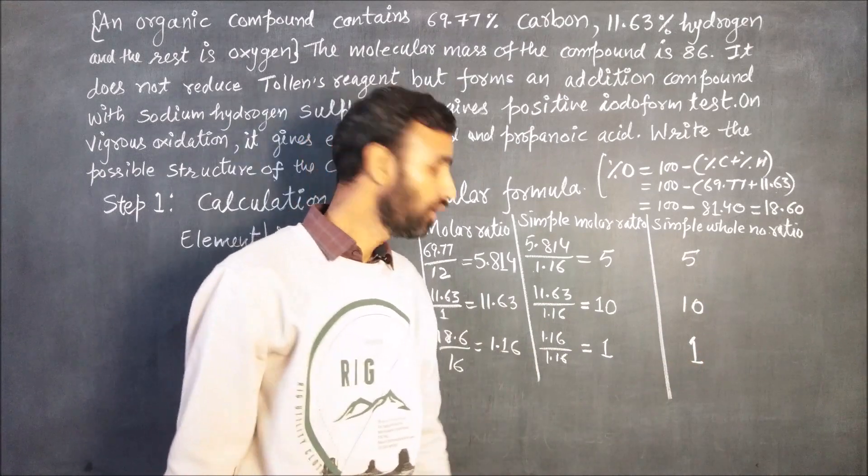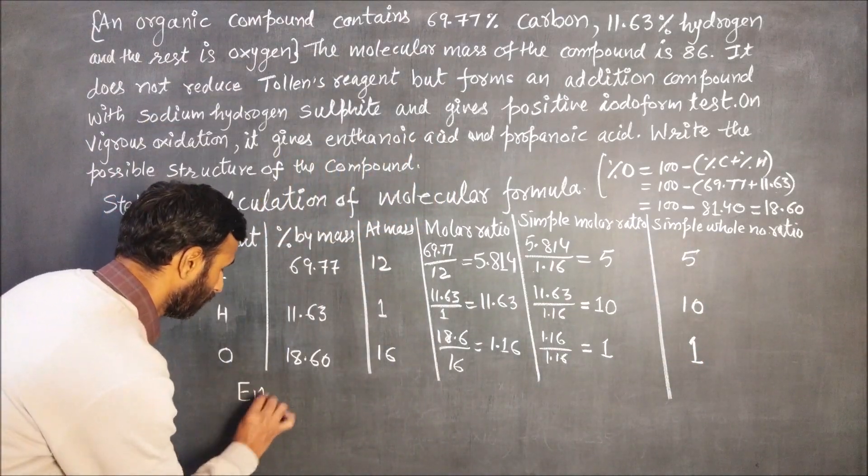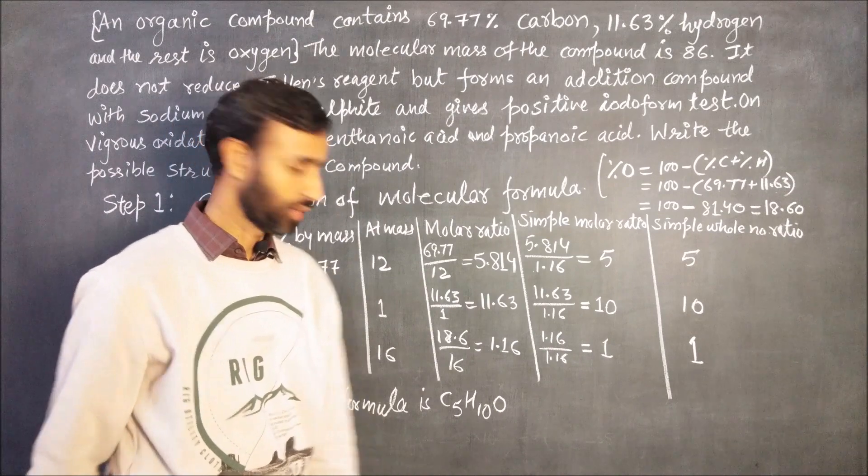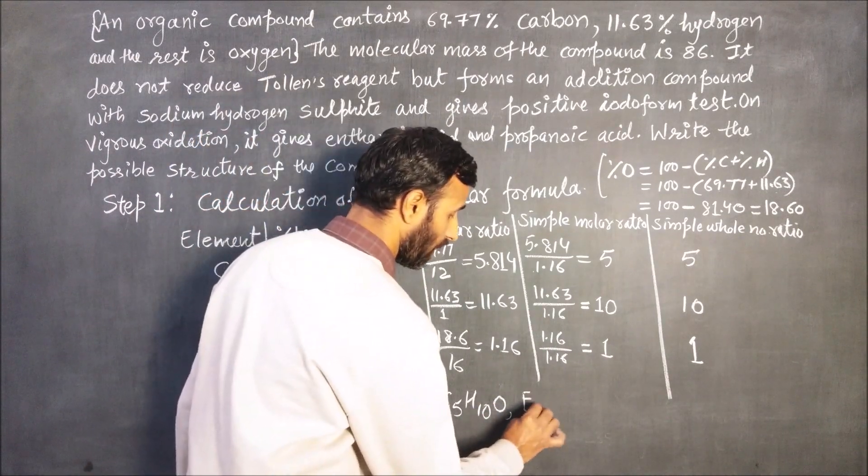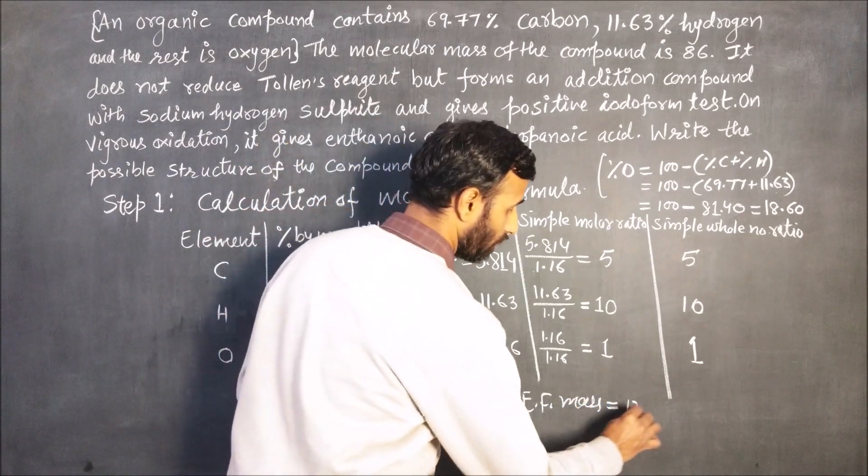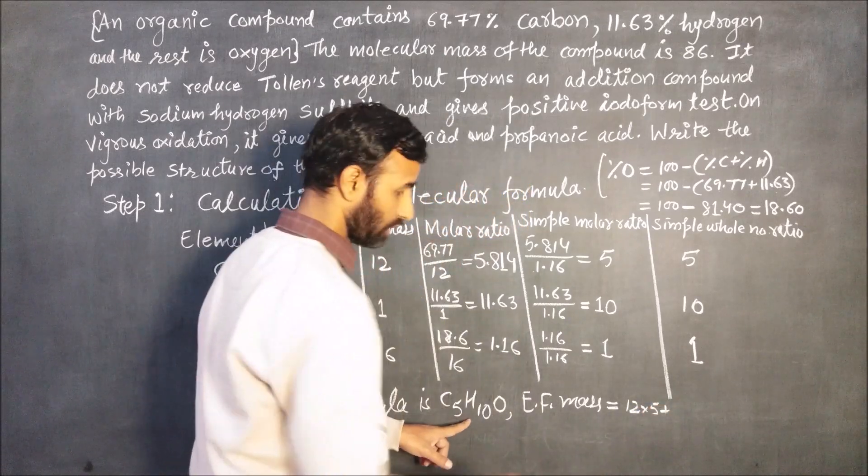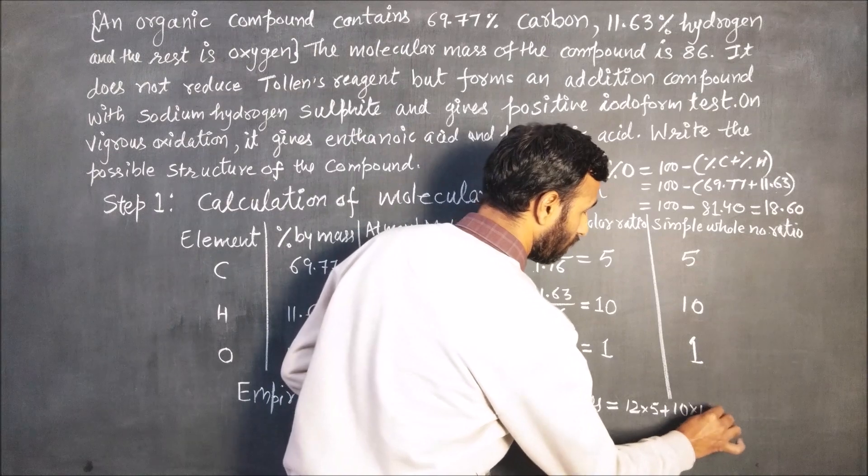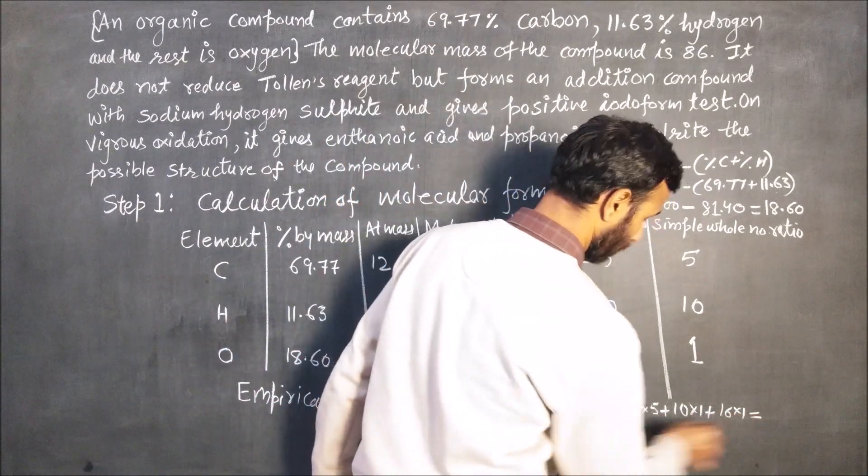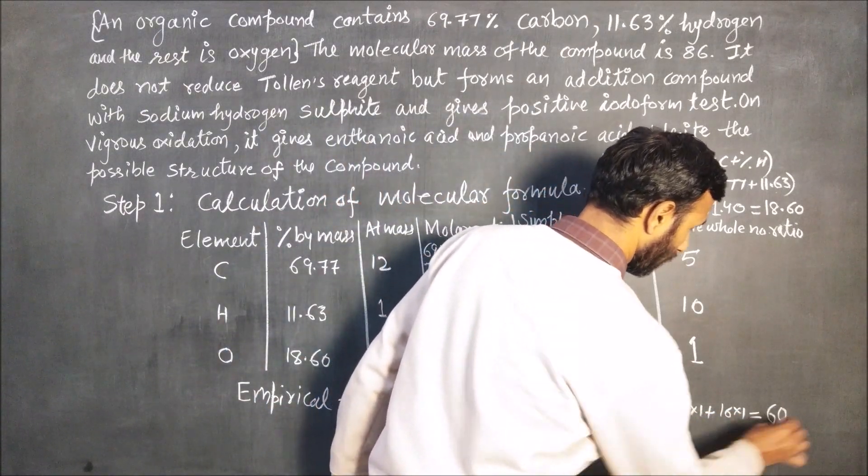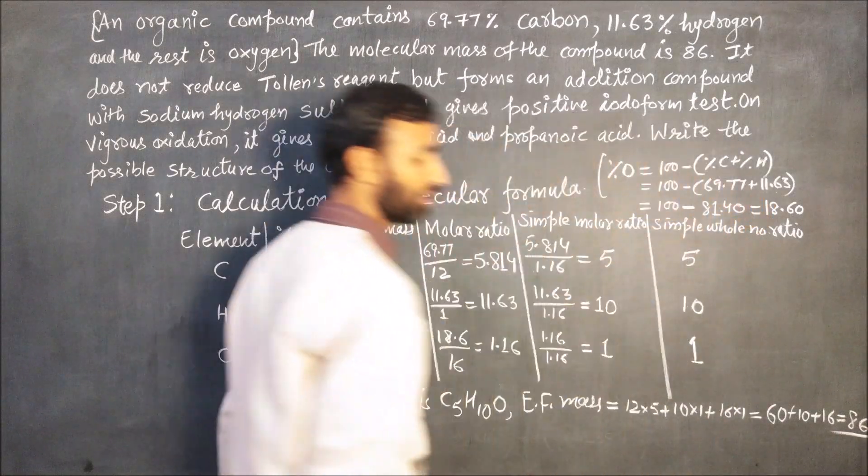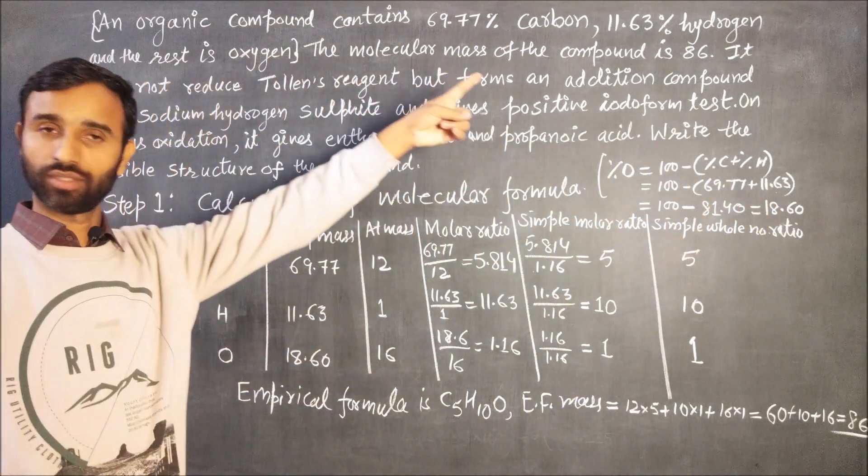So simple whole number ratio is 5, 10 and 1. So empirical formula is C5H10O. Now empirical formula mass is equal to 12 into 5 plus 10 into 1 plus 16 into 1. So it comes out to be 60 plus 10 plus 16, total it comes out to be 86.